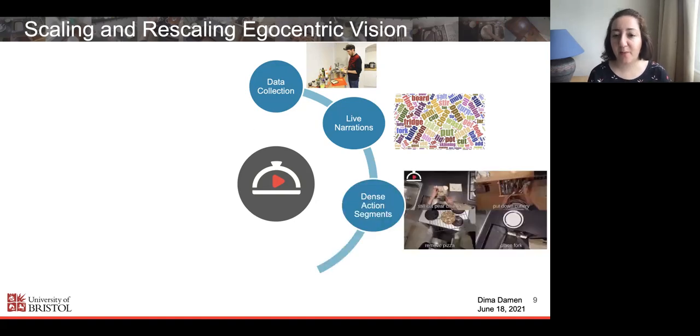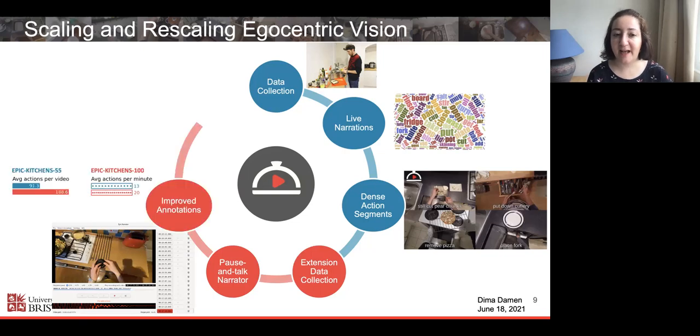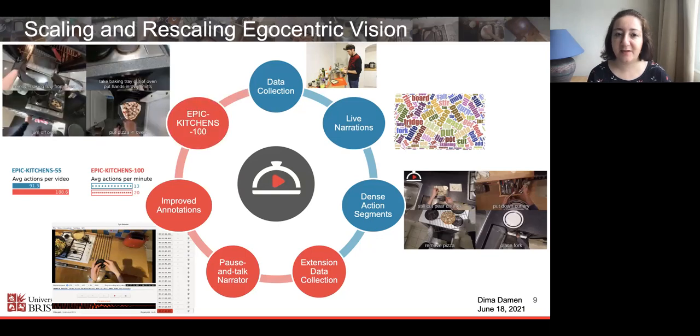From these, we had a scalable approach to achieve dense action segments, and in 2018 released the first version which we now call Epic Kitchens 55. Two years later we collected an extension, improved our narration interface using a pause and talk narrator which is publicly available, achieving higher density annotations and improved quality. And now we have Epic Kitchens 100.